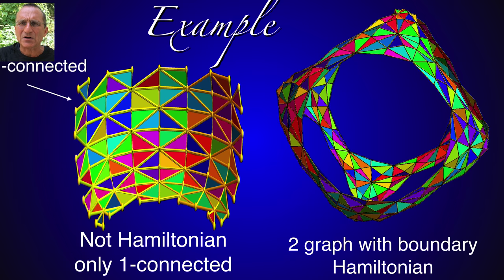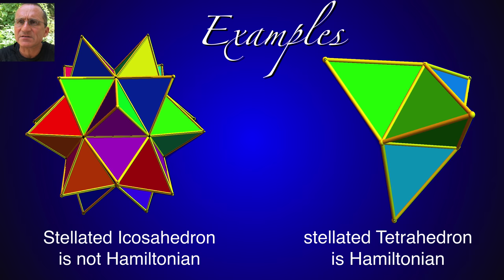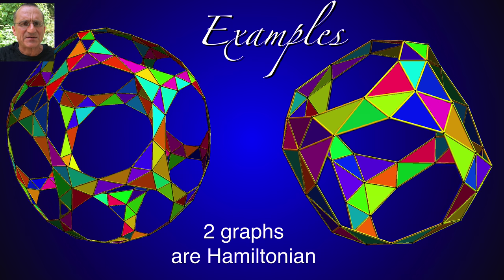Here we see another problem for Hamiltonian. The connectivity fails at the left example. To the right we see a two graph with boundary where the theorem applies. Stellated icosahedron, not Hamiltonian for similar reasons. And the Gardner-Harary graph, stellated tetrahedron.